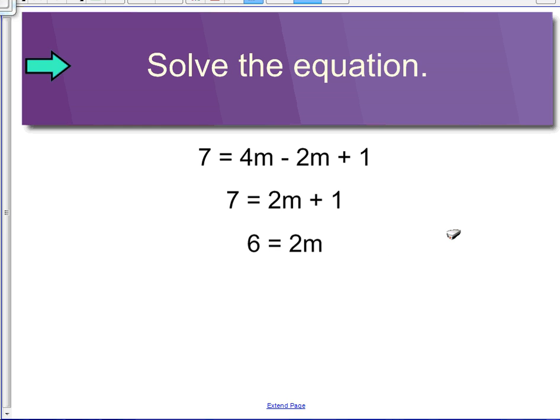Subtract 1 from both sides. 6 equals 2m. And if you think that the answer is 3, you are correct.